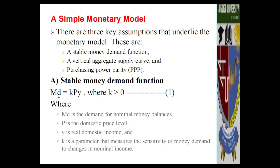The first assumption is a stable money demand function. The demand for nominal money balances is equal to K, a parameter, times the domestic price P, times domestic output Y — where K is greater than zero. Here P is the domestic price level, Y is domestic income, and K is the parameter that measures the sensitivity of money demand to changes in nominal income.